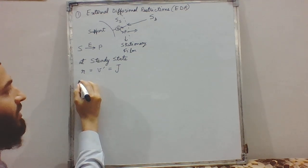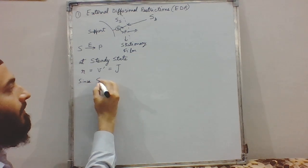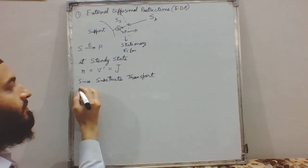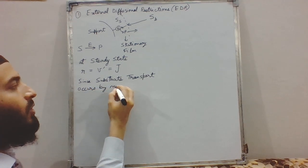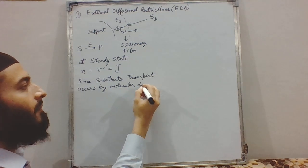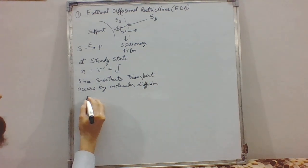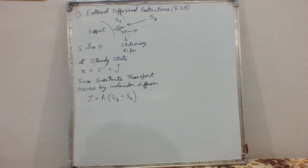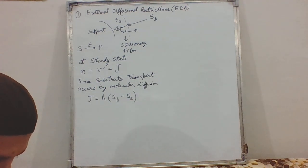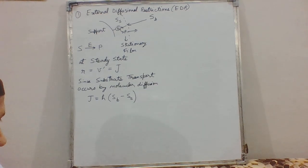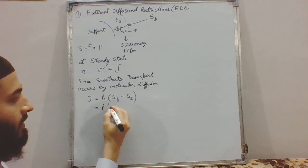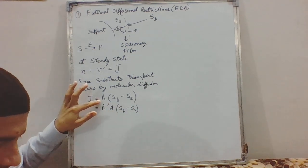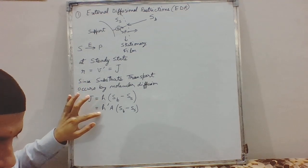Since substrate transport occurs by molecular diffusion, it will depend upon the concentration gradient between the bulk substrate concentration and the substrate concentration inside the thin film. This can also be written as h-prime times A, where h is the volumetric mass transfer coefficient and h-prime is the linear mass transfer coefficient.